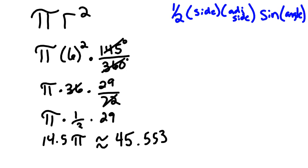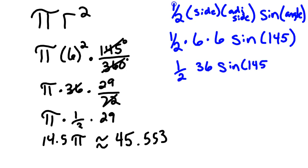Okay, so in our case, that would be 1 half times 6 times 6 times sine of 145 degrees. You want to make sure your calculator's in degrees. Sometimes they default to radians. And so that would be 1 half of 36 times sine of 145, and 1 half of 36 is 18.